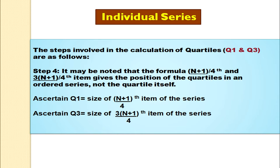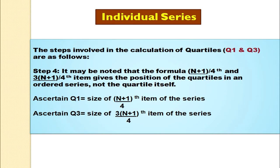Once we have arranged the data in ascending order, the formula gives the position and not the quartile itself. So we compute Q1 as the size of the (n+1)/4th item of the series, and Q3 as the size of the 3(n+1)/4th item. To summarize the four steps: first, arrange the data; second, identify Q1 at (n+1)/4 and Q3 at 3(n+1)/4; third, locate the values; and fourth, get the value of the quartiles.